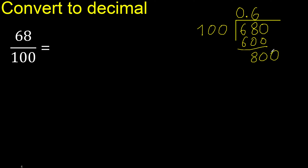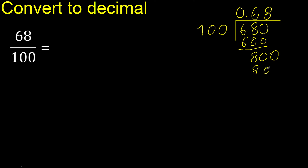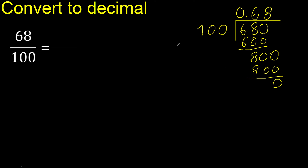Always complete with 0. Point only once: 800. 100 multiplied by which number? Multiplied by 8 is exactly 800. Subtract: remainder is 0. Finish.